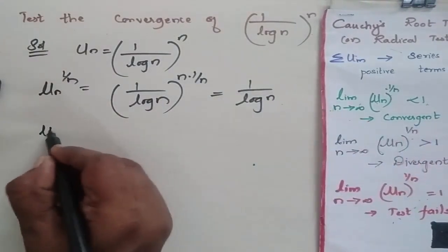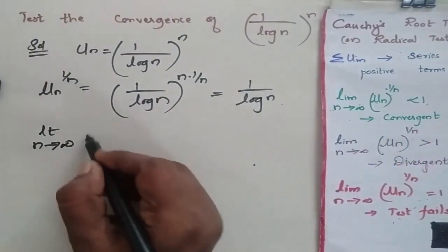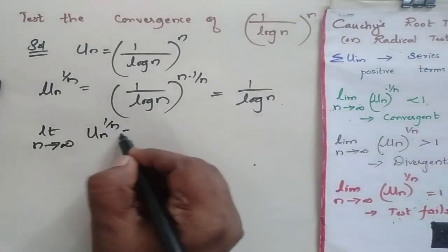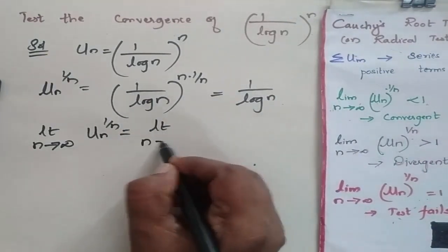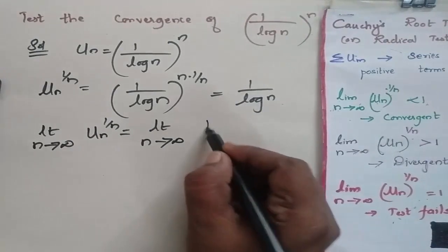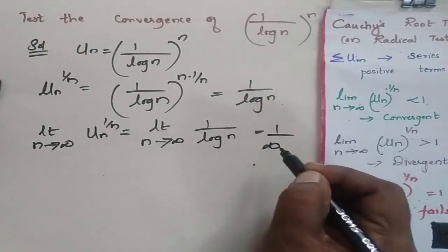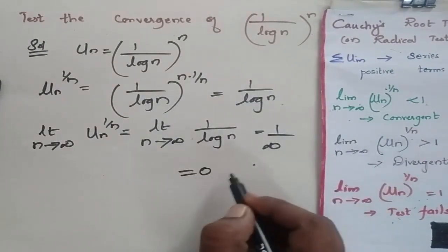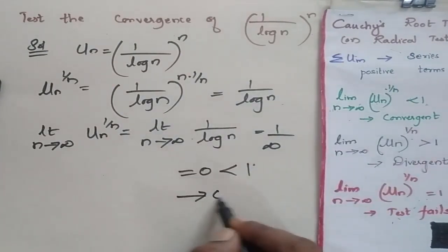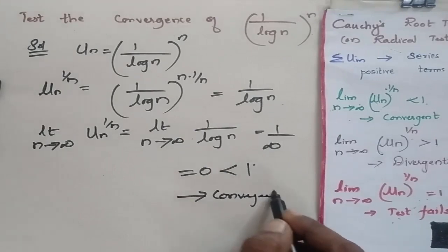Now I am going to find limit n tending to infinity of u_n to the power 1 by n. This is equal to limit n tending to infinity of 1 by log n. So this is equal to 1 by infinity which is equal to 0 which is less than 1 and so the series is convergent.